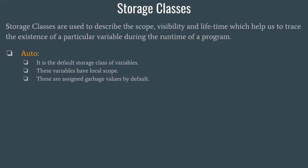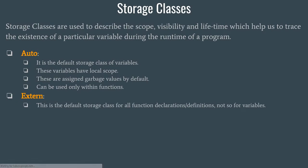Auto variables are assigned garbage values by default if not initialized — garbage means any random value of no significance, automatically assigned by the compiler. These garbage values are assigned only if your variables are not initialized; if you have initialized your variables, no garbage value shall be assigned. Also, auto variables can be used only within functions. The next type is external, which is the default storage class for all function declarations and definitions — that is a major difference between auto and external.